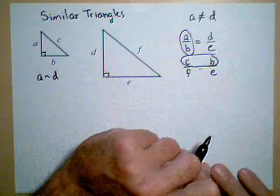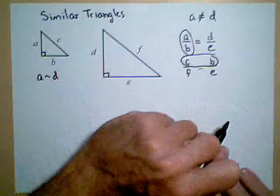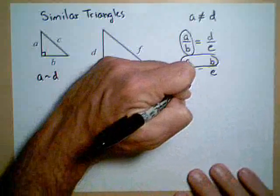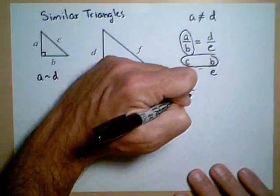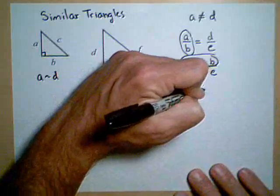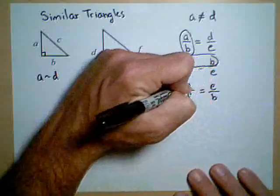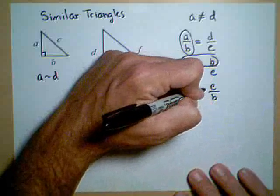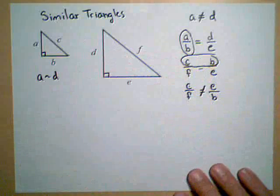I would not have wanted to do this. I would not have wanted to say C over F equals E over B. These are not part of the same triangle. That is not a true statement.